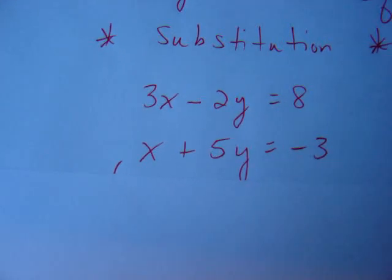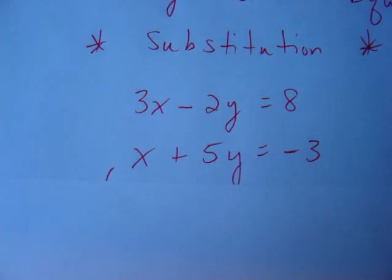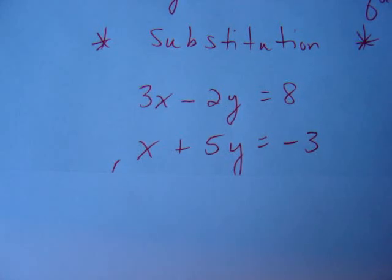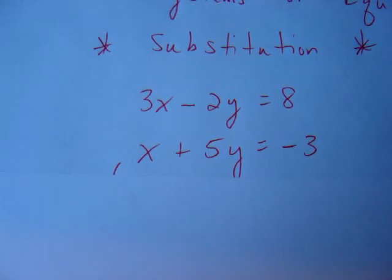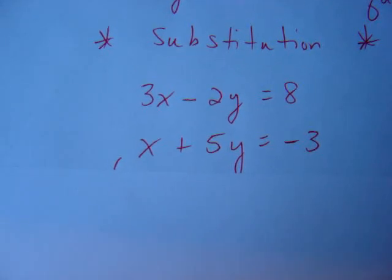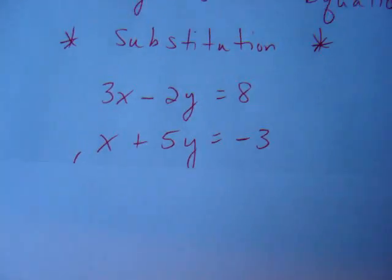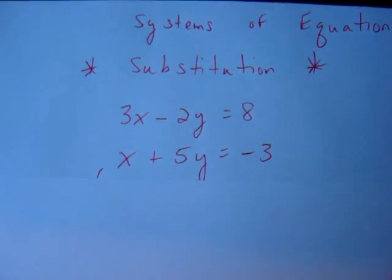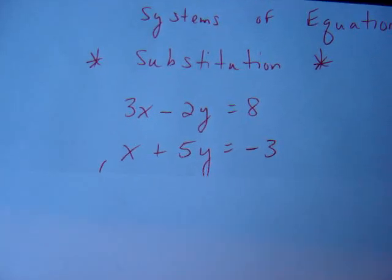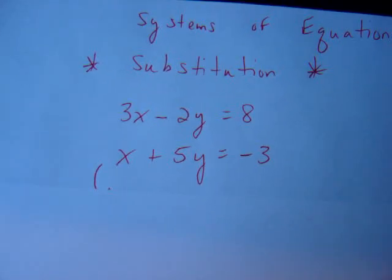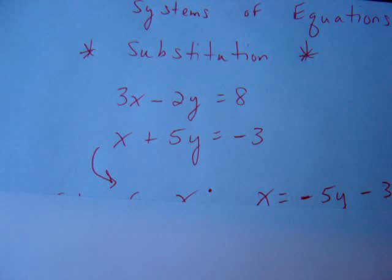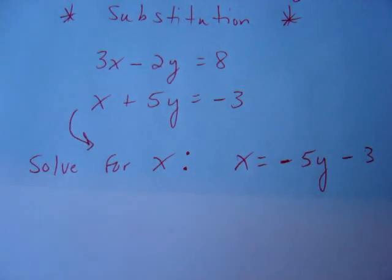If we just subtract the 5y, we will have x by itself and then we'll be in good shape because the whole strategy here is once you get either x or y by itself, you can replace it into the other equation. Moving right along, we're going to keep our top equation 3x minus 2y equals 8, but we're going to solve the bottom one for x.